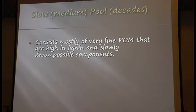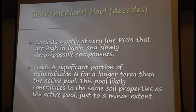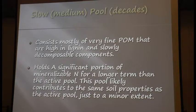The slow pool is just the medium one. It's important in the sense that there's a background population of microbes and they're important to keep things going. It holds a significant portion of nitrogen also for that longer-term population and it contributes very much to the same properties as the active fraction.